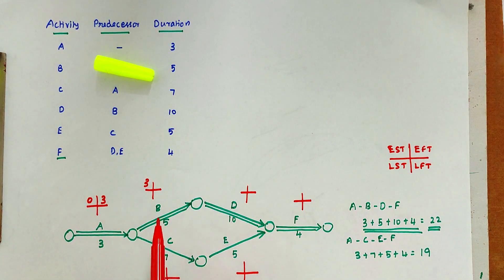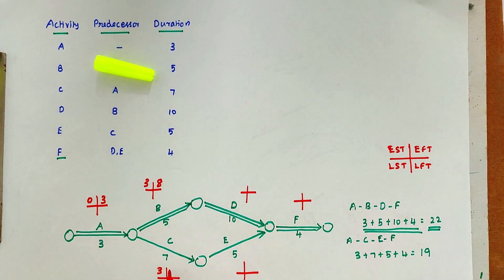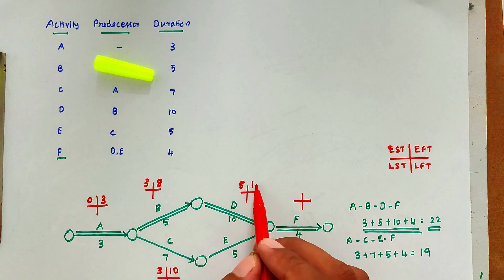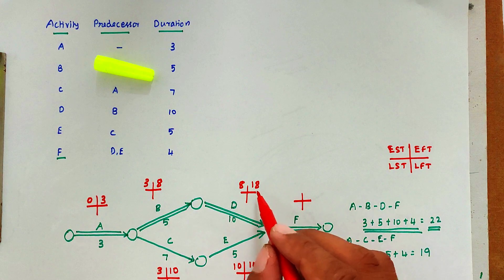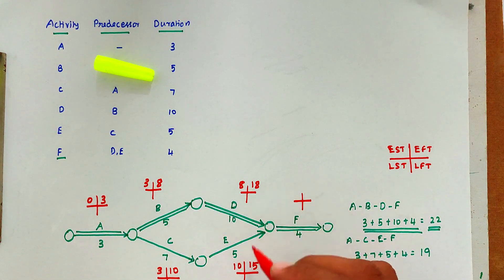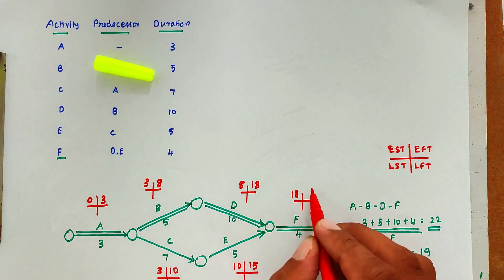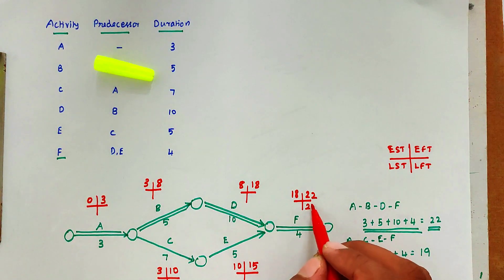We place 3 at the end of A. Then for the forward pass: 3 + 5 = 8 for path through B, and 3 + 7 = 10 for path through C. We place 8 after B. Then 8 + 10 = 18 for D, and 10 + 5 = 15 for E. We take the maximum value from both EFTs, which is 18. So 18 + 4 = 22 for F.